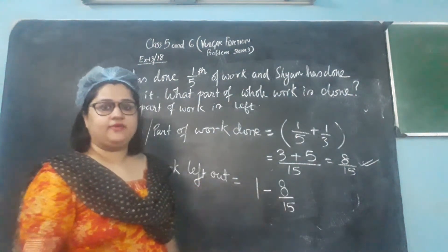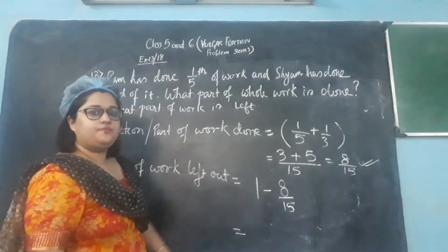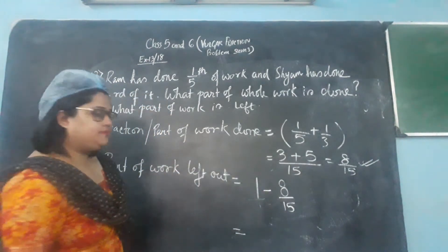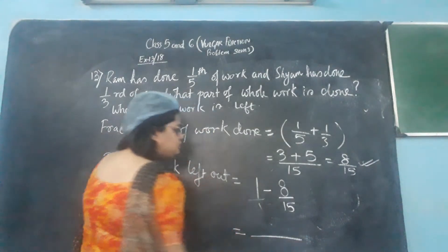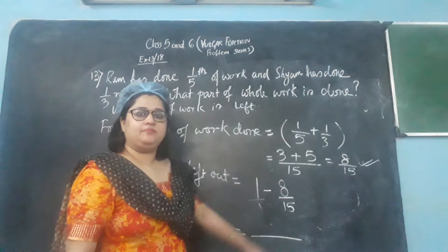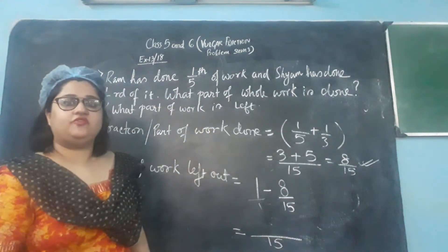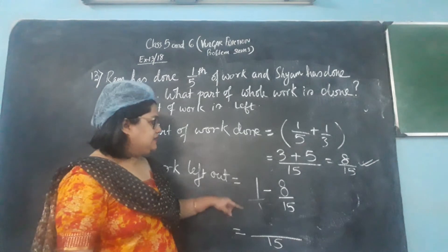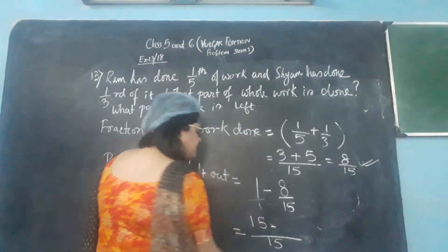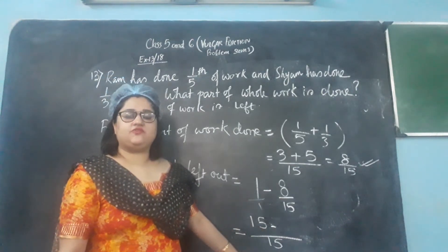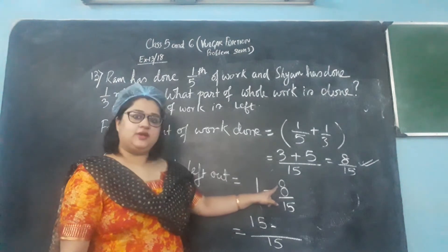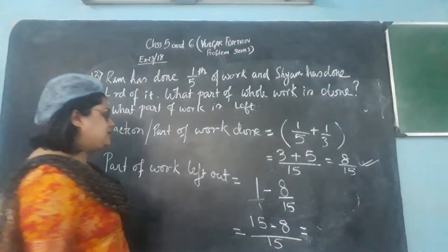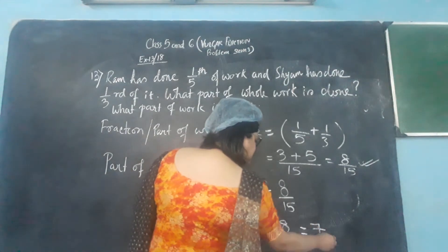Already done by both of them. So when you subtract: 1 has no denominator given, just take the denominator as 1. What is the LCM between 1 and 15? It is 15 itself. On top, 1 × 15 = 15, multiply that 15 with 1 to get 15. Then 15 into how much gives 15 — that's 1 — multiply with numerator 8 to get 8. So 15 minus 8 gives 7 by 15.